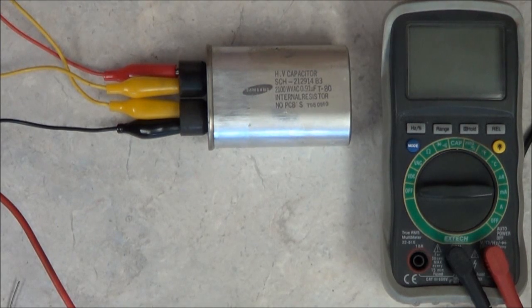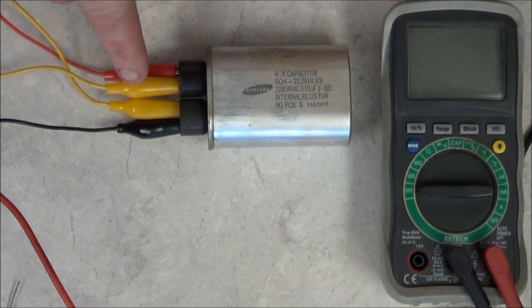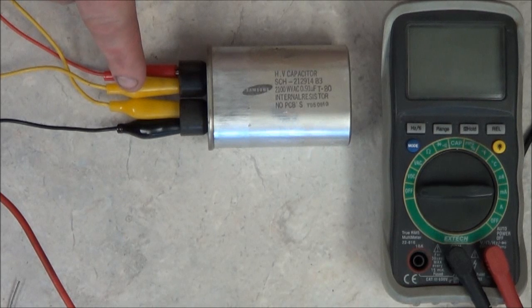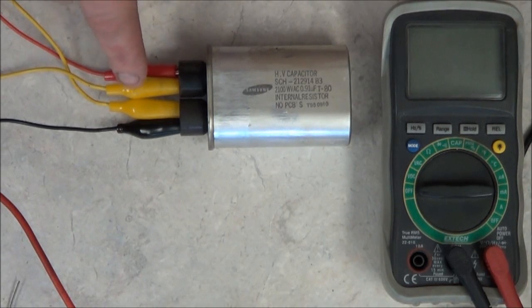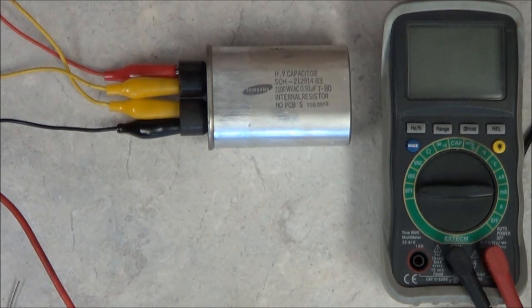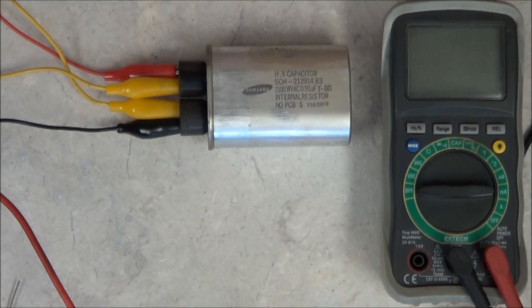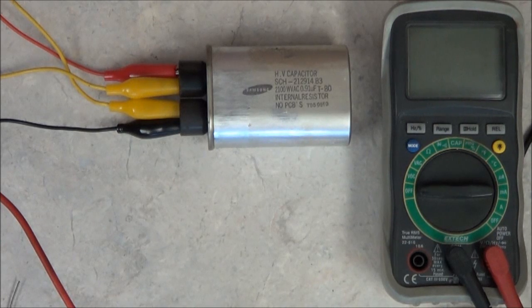Now, as I said, when you remove these, be sure you completely discharge them. You can use a well-insulated needle-nose pliers and short the two terminals together. As you can see here, I do have a yellow alligator clip connecting the two terminals together. So, I'm wanting to keep this discharged throughout the process so I can show you two ways you can test these capacitors.